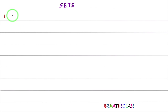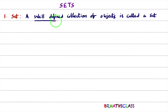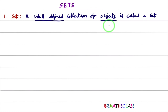The first point is: what is a set? A well-defined collection of objects is called a set. Here you need to observe two words — first one is 'well-defined' and second one is 'objects.' In mathematical language, all the things which are either living or non-living are known as objects.